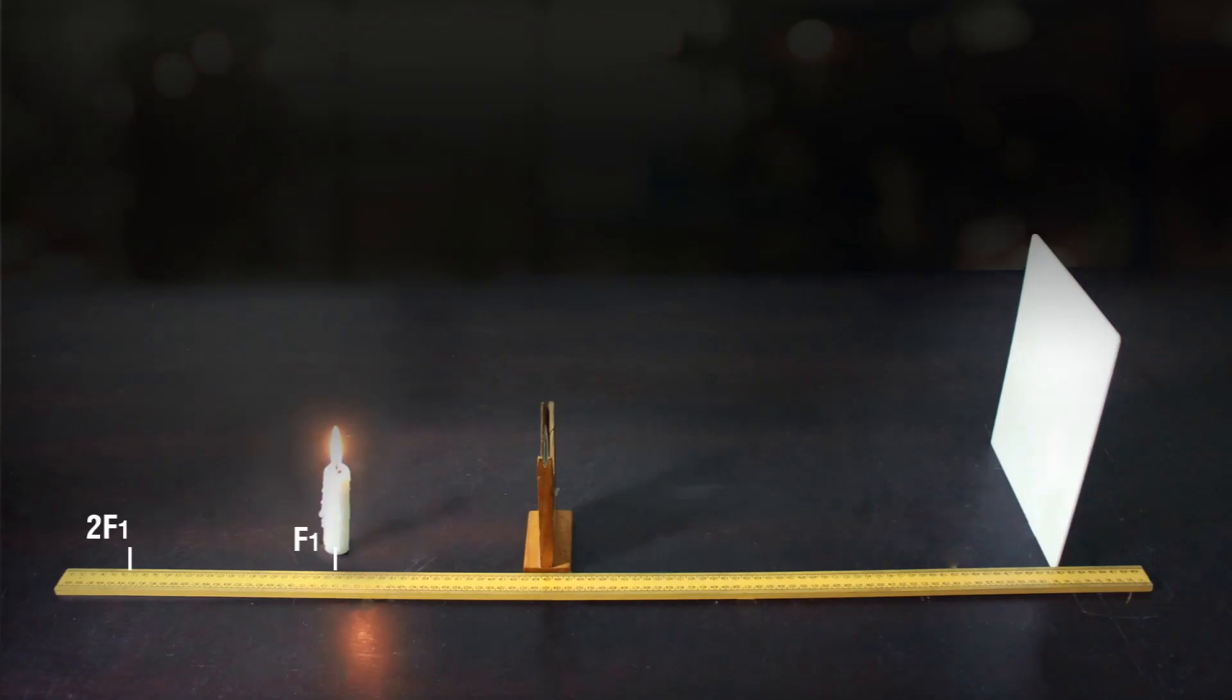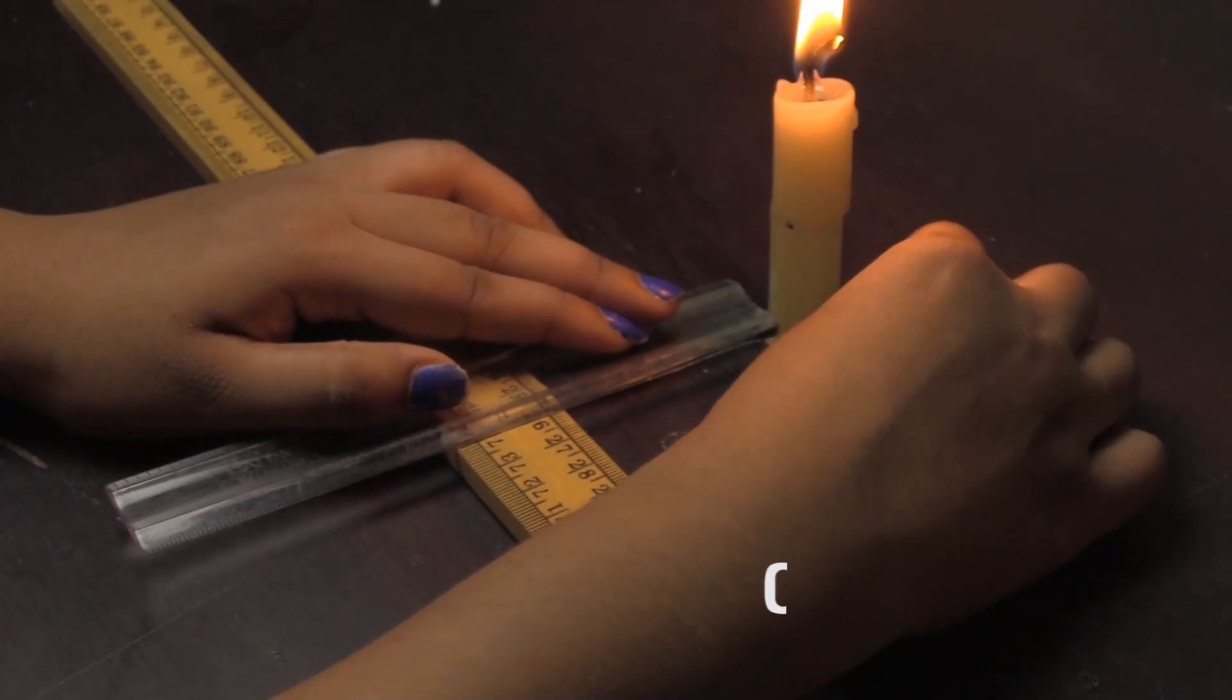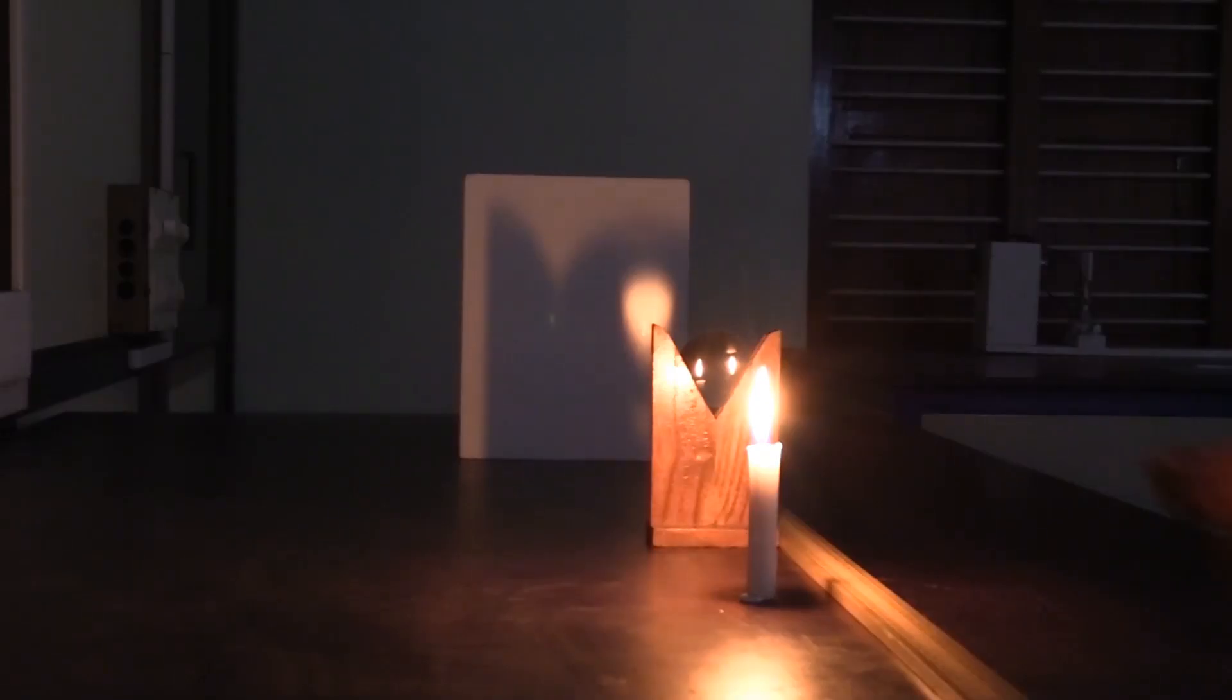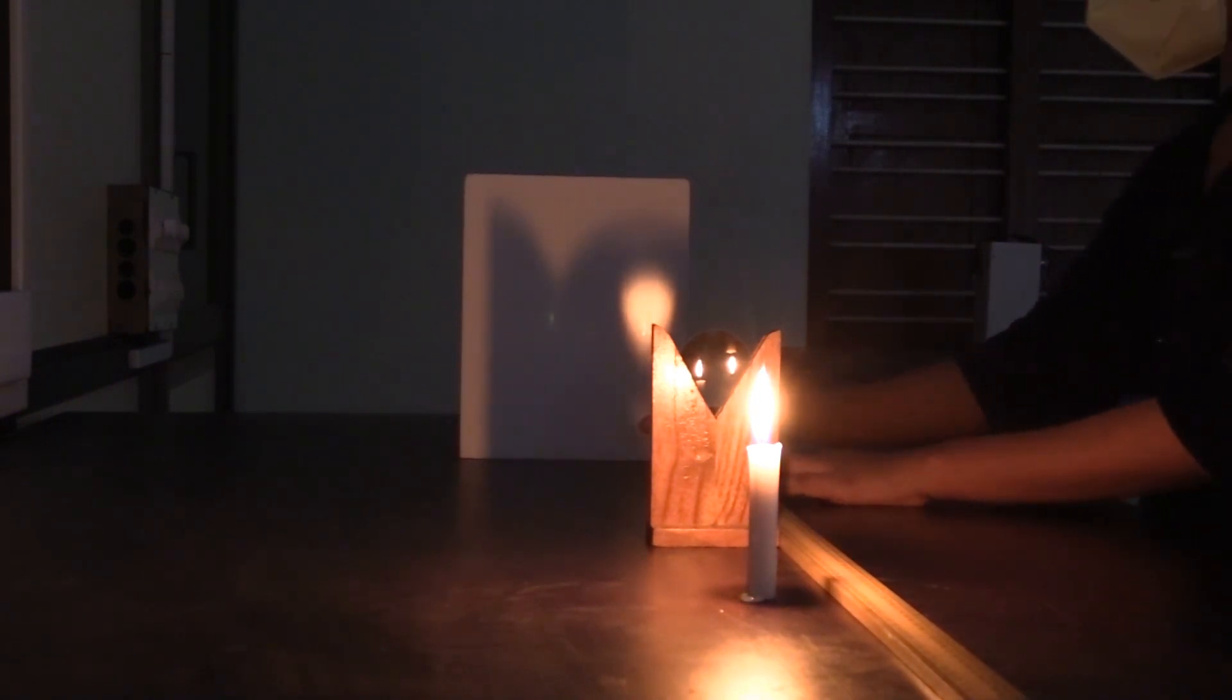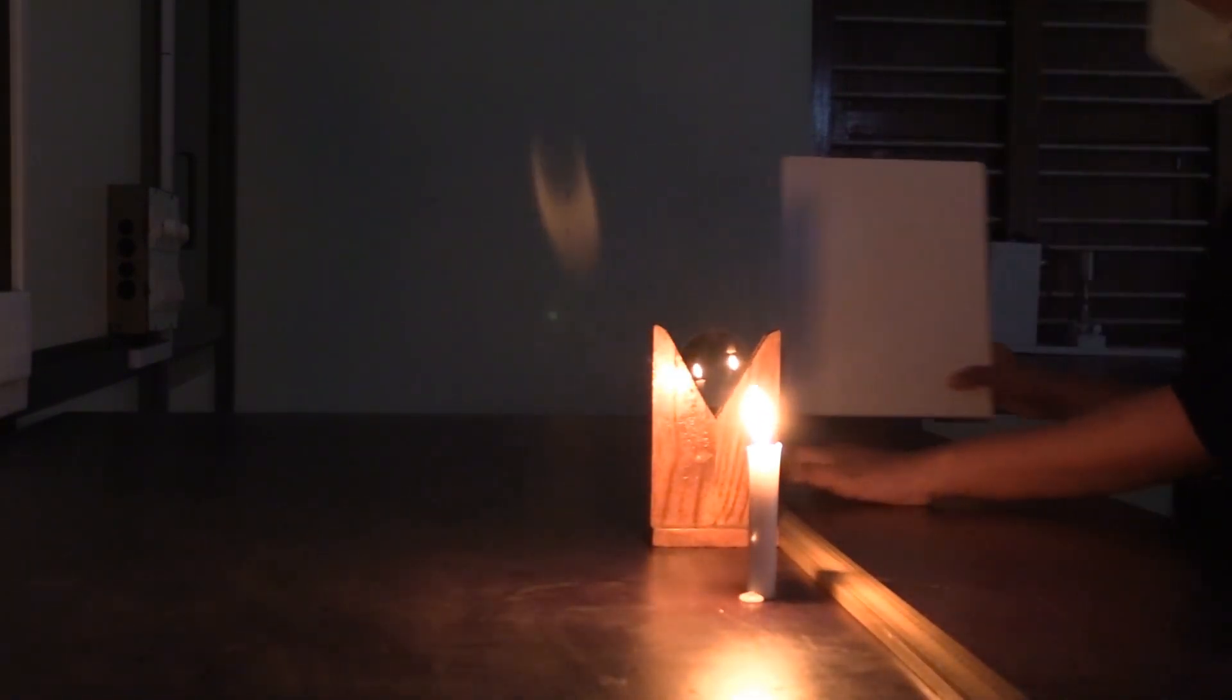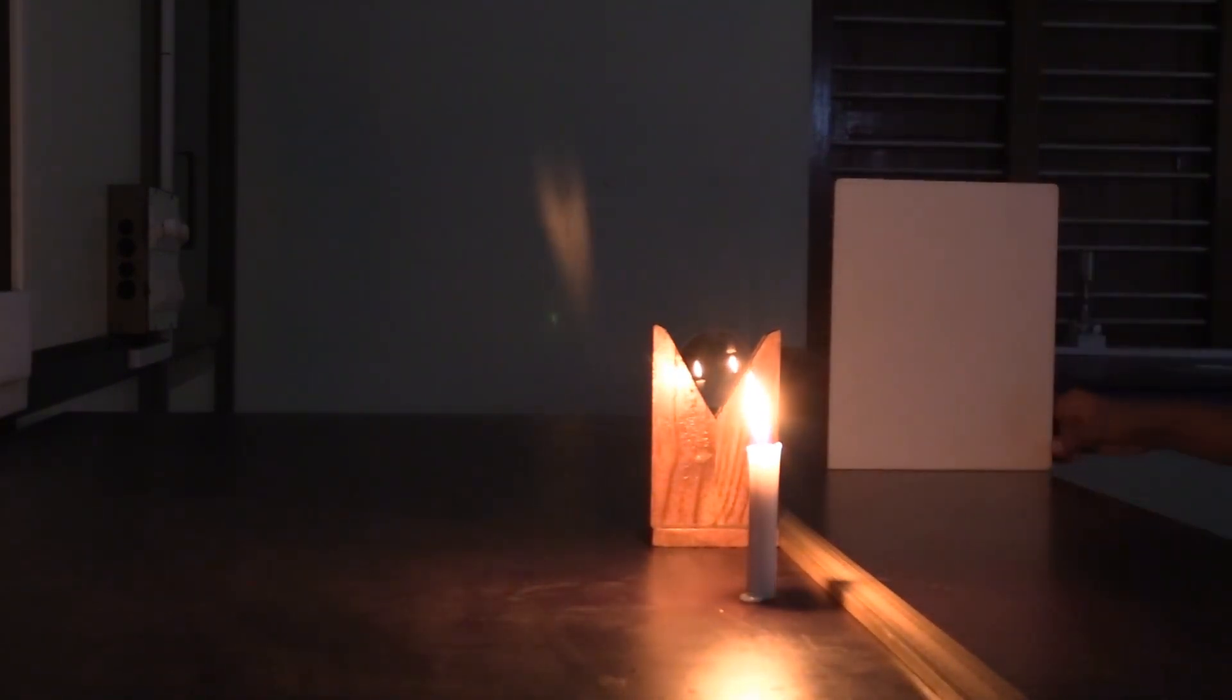Case 4: Object at F1. Place the lighted candle at the focus F1. Move the screen back and forth. Notice that no image will be obtained on the screen. Remove the screen and observe the highly enlarged but blurred image formed on the wall at the end of the room.